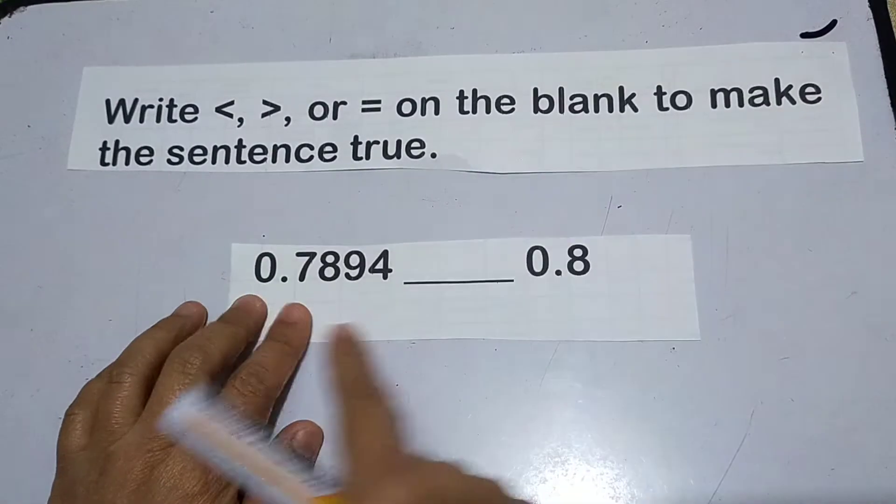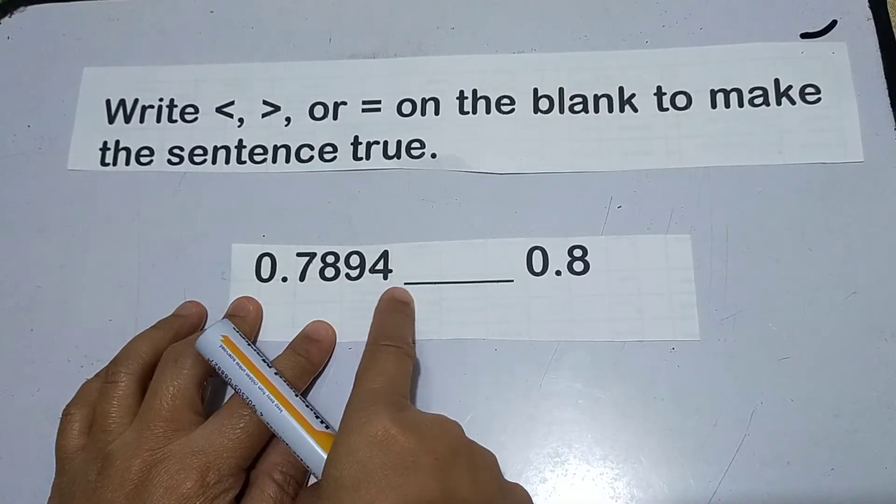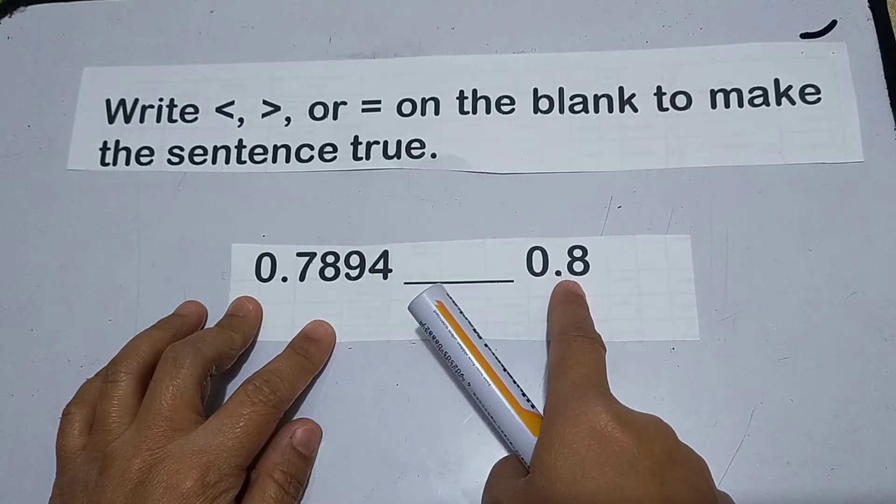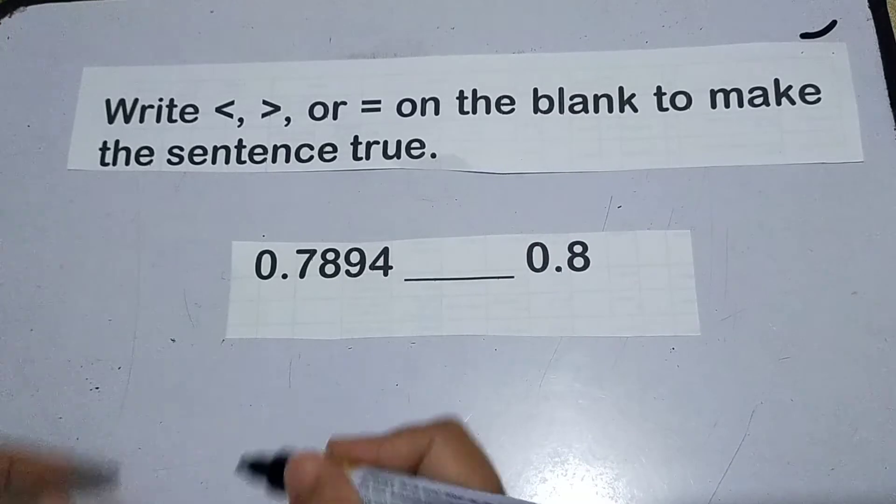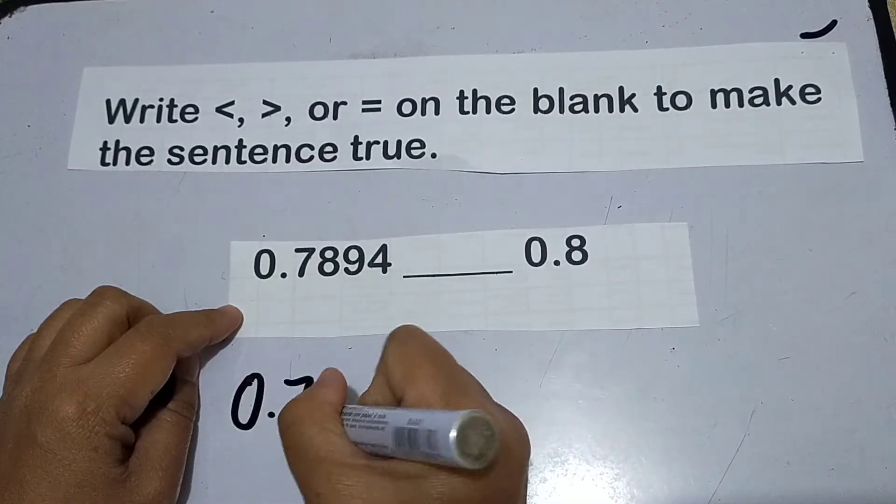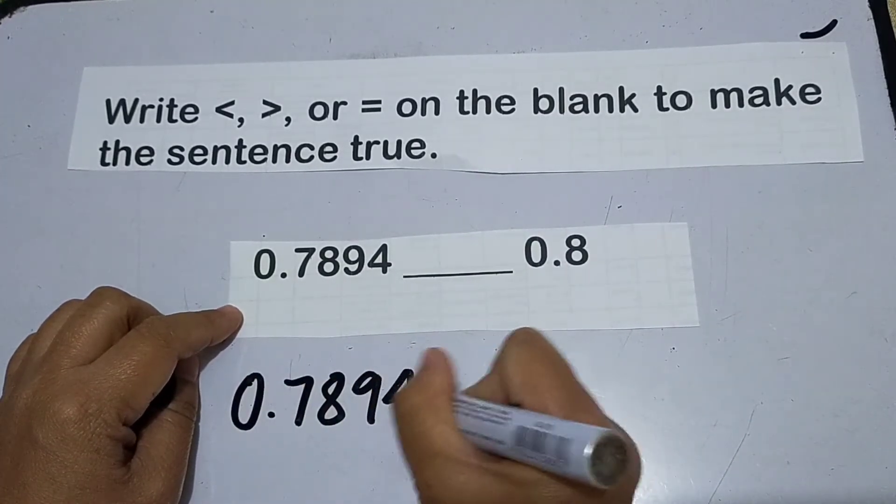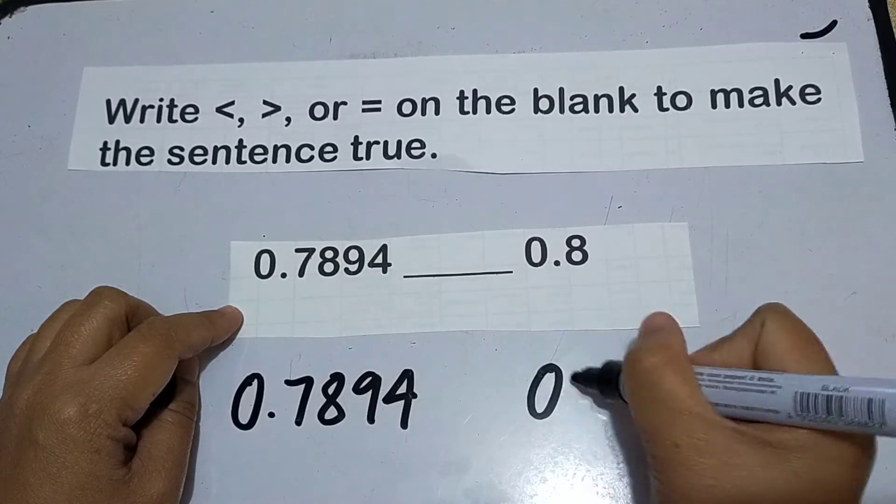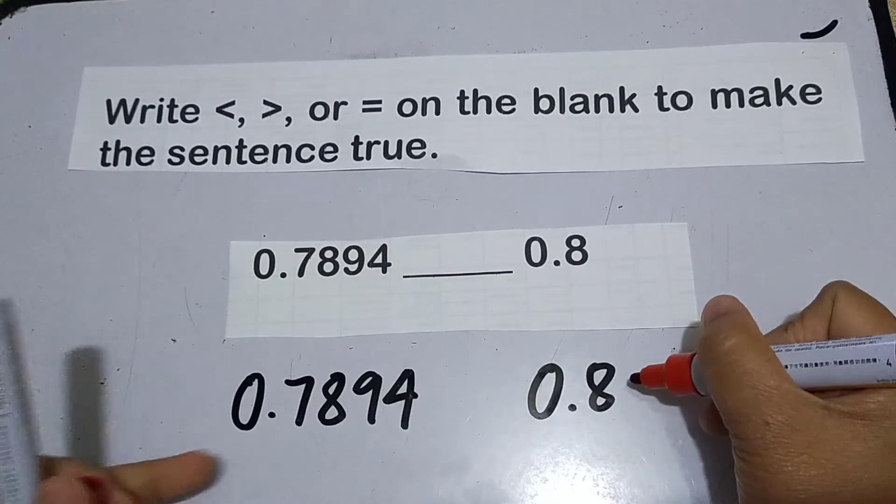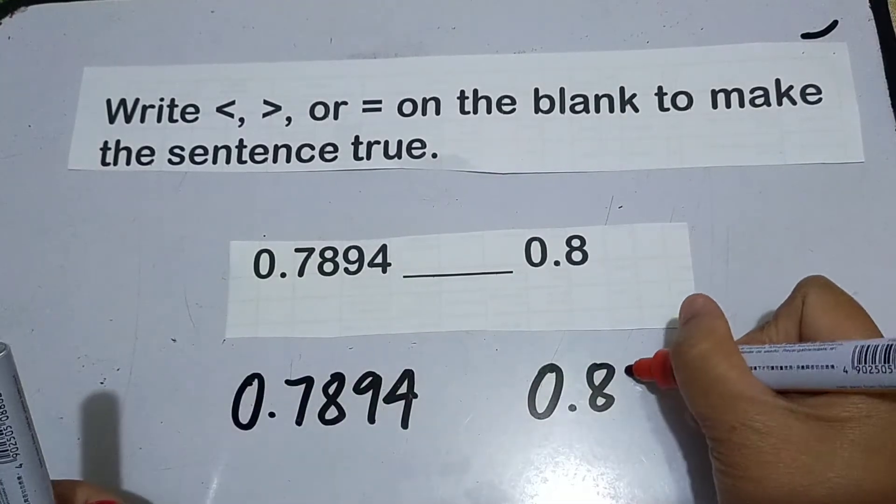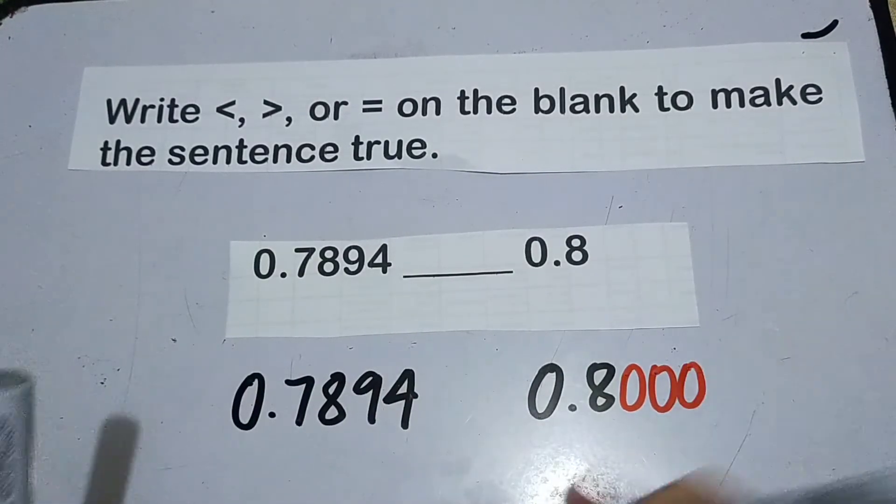Alright, so another example. This one. 7,894 ten thousandths and then itong isa naman ay 8 tenths. So gagawin natin yung technique din sa kanina. Rewrite natin itong unong given. Gagawin natin apat na digits din, no? Just like sa given na to.